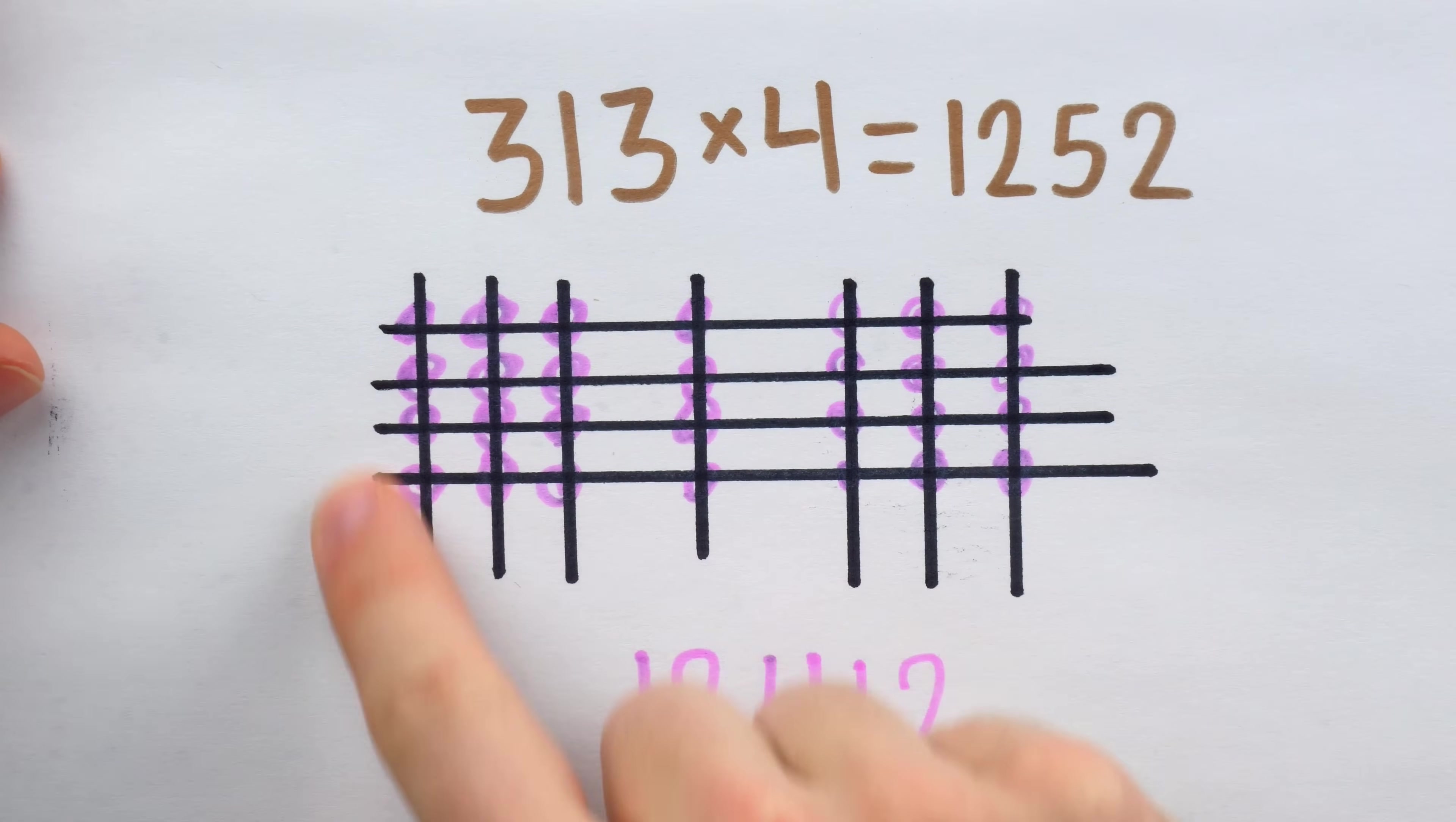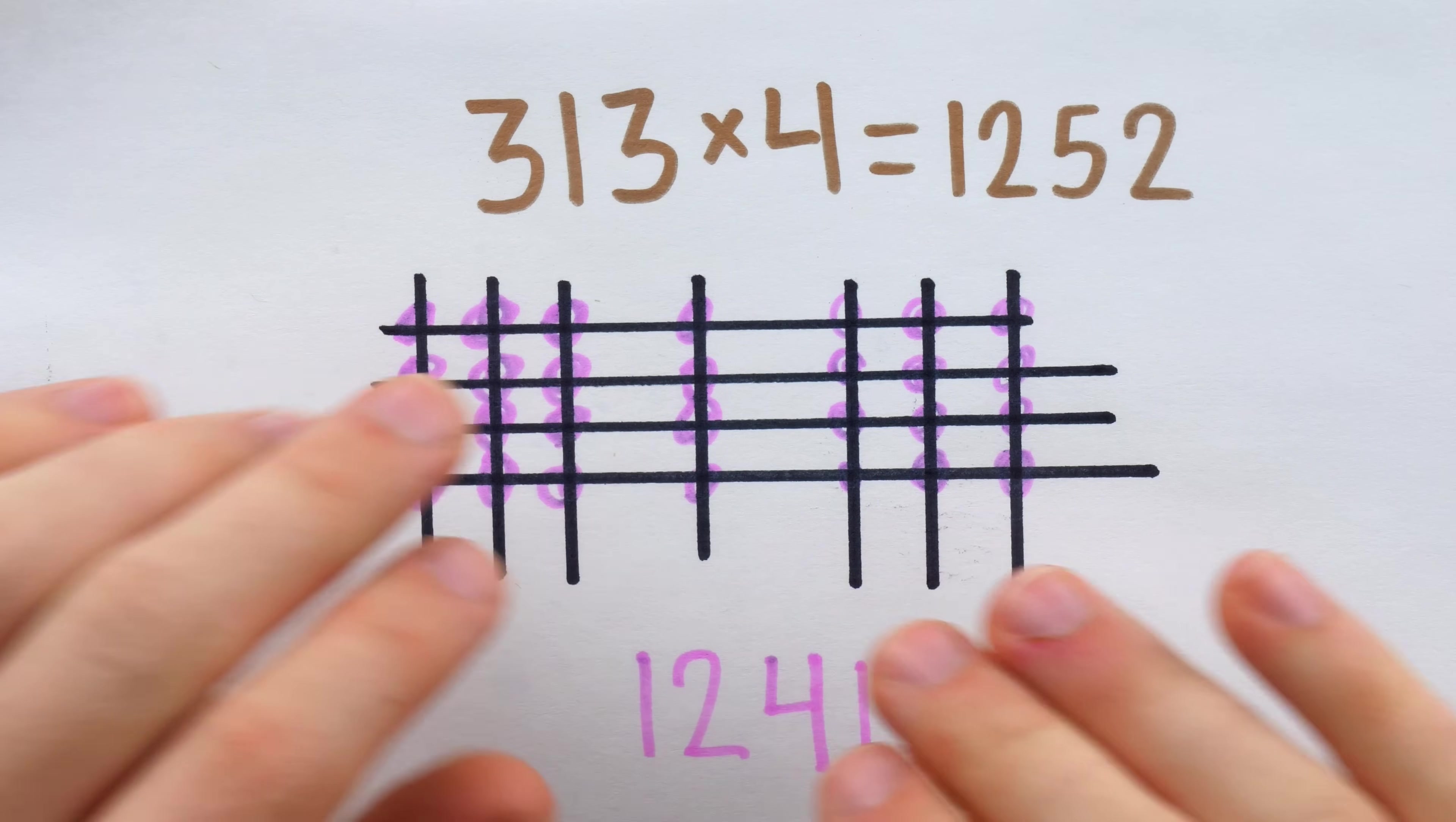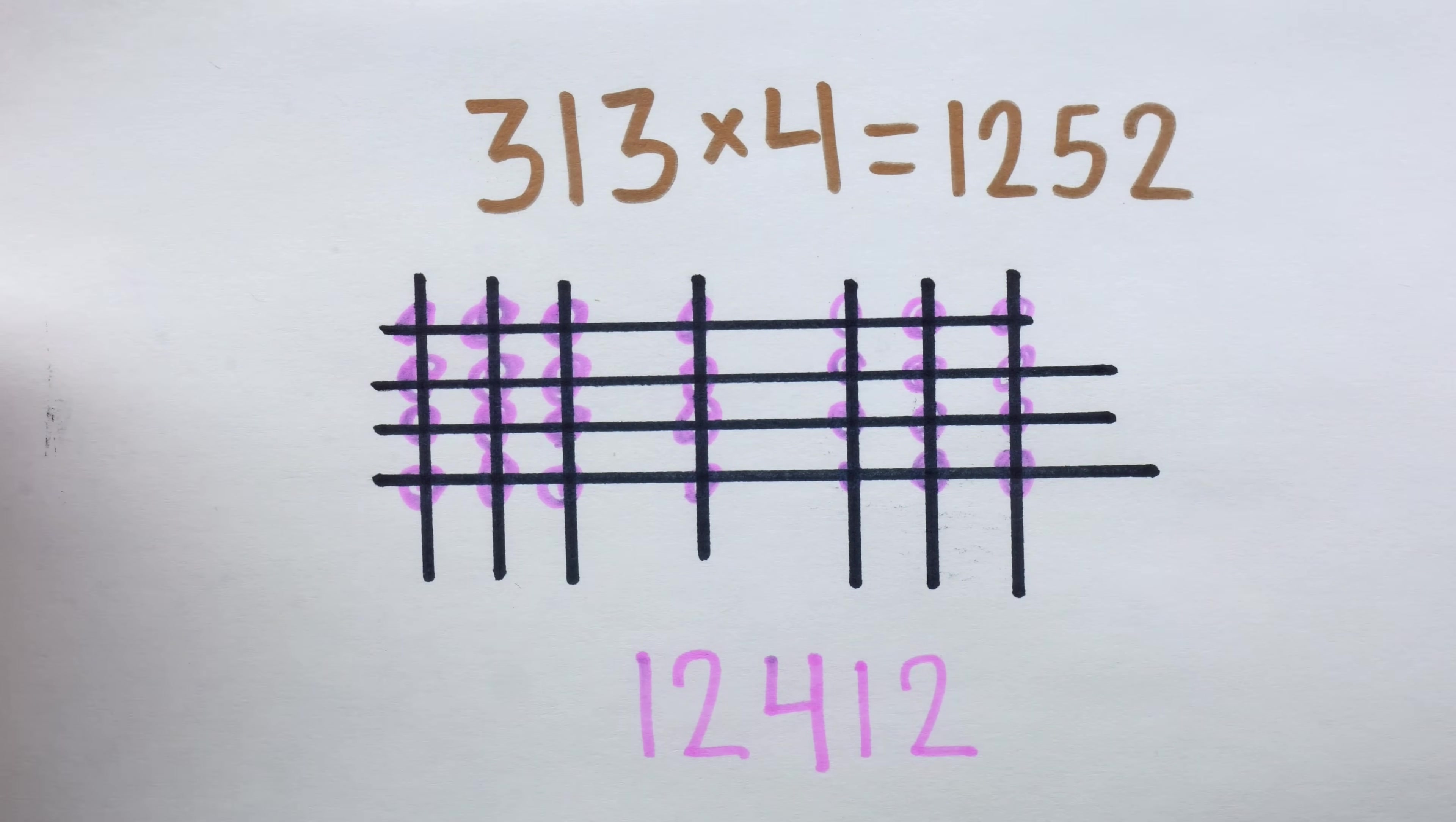So the method does work, we can even use it if both numbers have multiple digits, but when we use the method, in general we have to be careful with the place values and make sure we get them all correct.